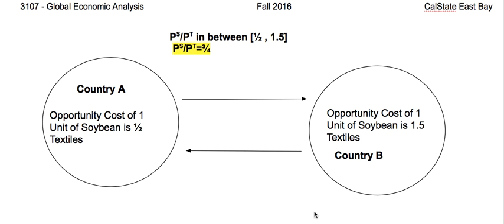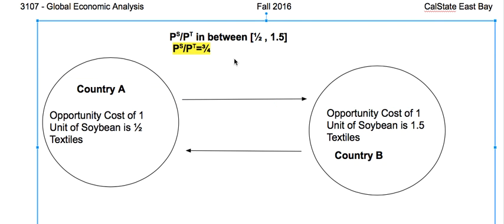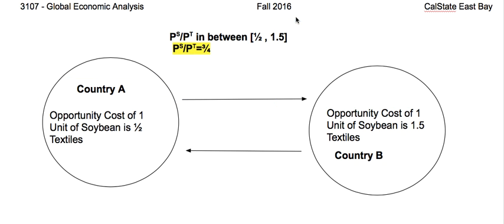Let's put ourselves in the shoes of a producer of textiles in country A, to understand the economics of opening up to international trade. We have established that the relative price PS over PT must be in between 1.5, which is the autarky level in country A, and 1.5, which is the autarky level in country B. By hypothesis, we say that the international level of prices will be 3/4, which is in between those two levels.